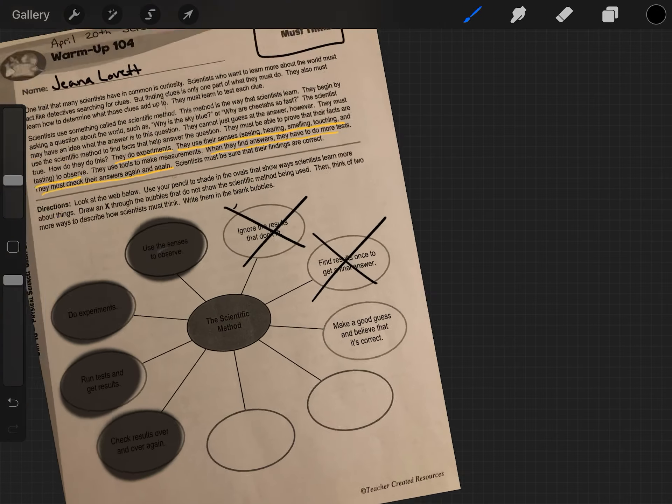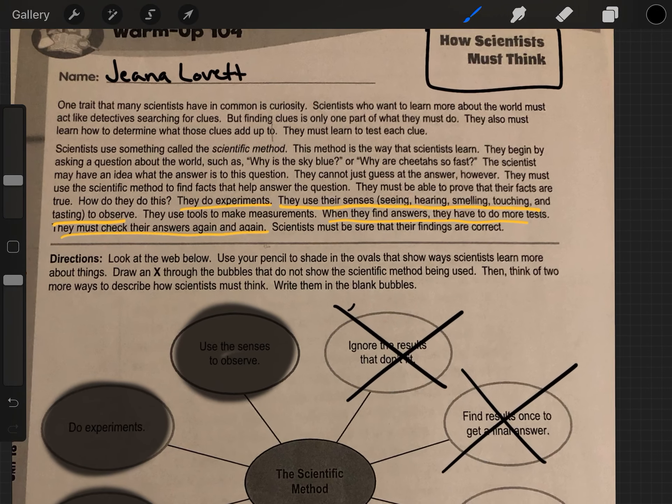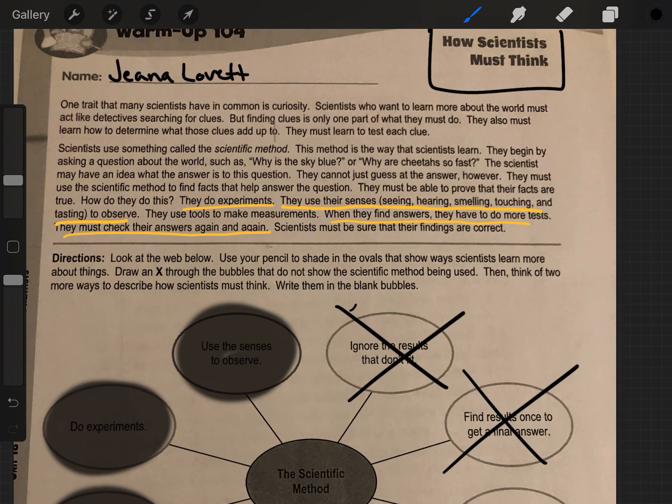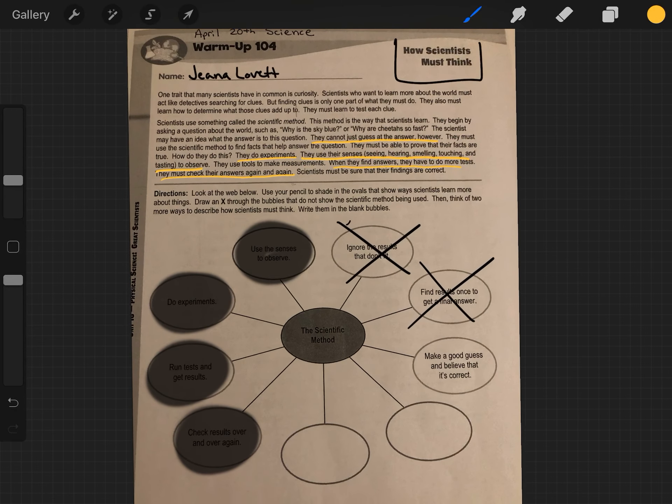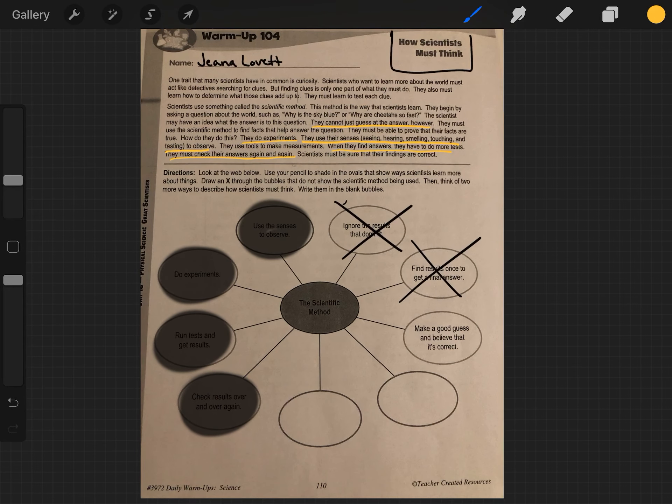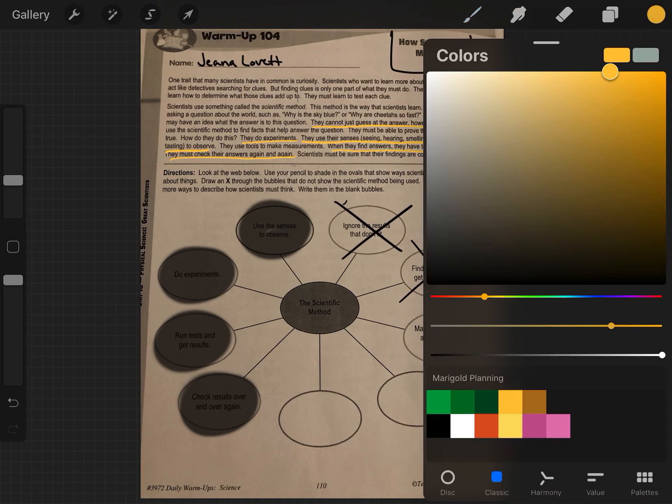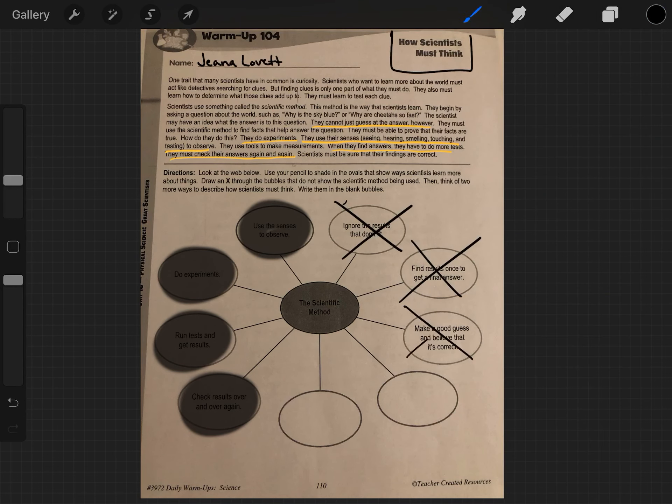Okay, they make a good guess and believe that it is correct. So scientists, remember, they cannot just guess at the answer, however. A hypothesis is not just a guess. You can't say, yeah, I think our eyes work because they're tiny cameras that take pictures. No, you have to have something that is backed by research, a question that you can answer that is in an if-then statement. So this circle is also incorrect.